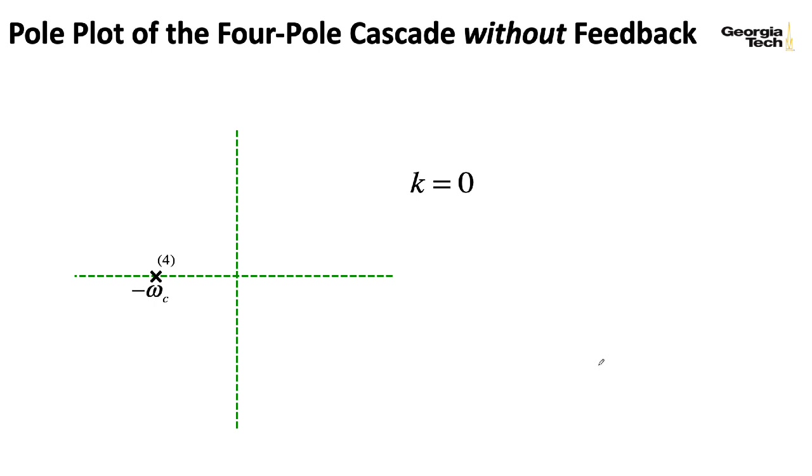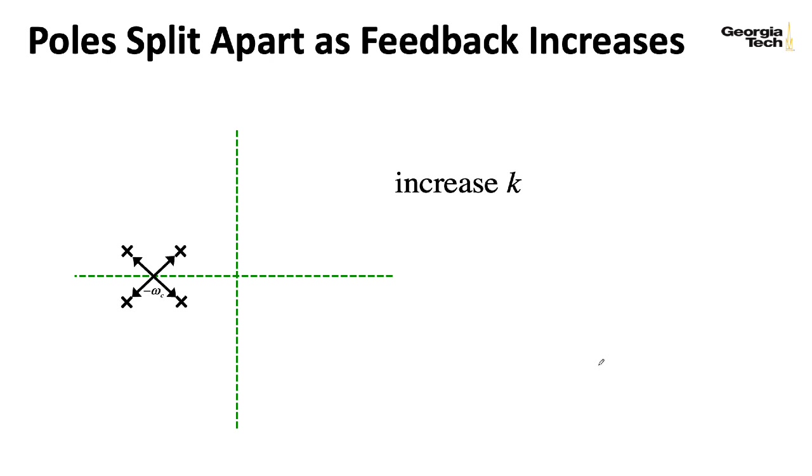As I start to increase the feedback, the poles start to move away from the imaginary axis and each other, and they start to spread out a bit. And then as you increase k, they spread out more and more.